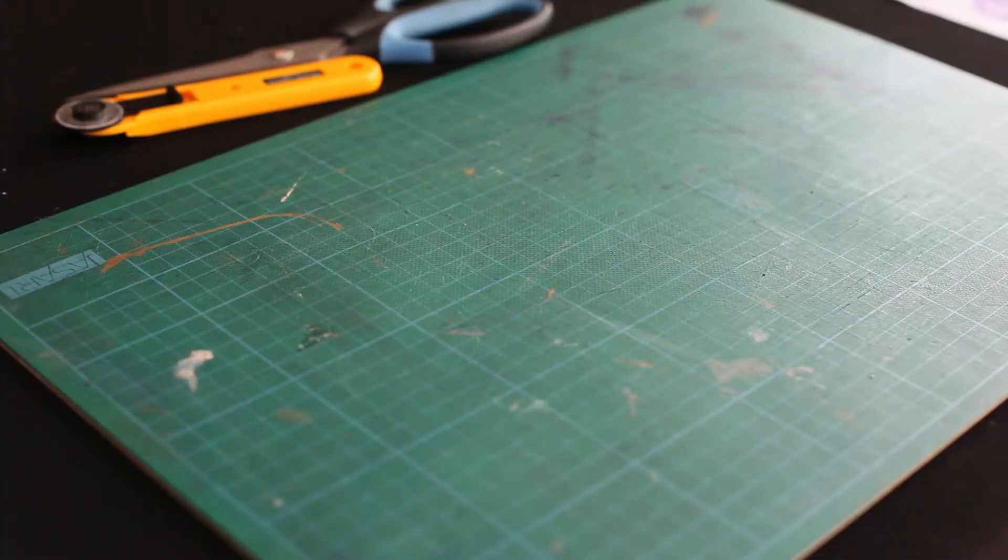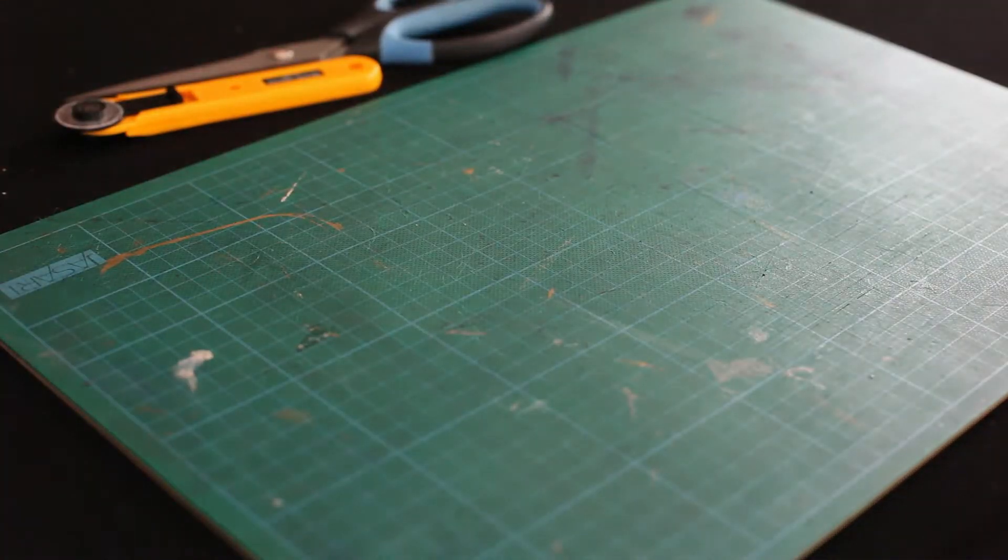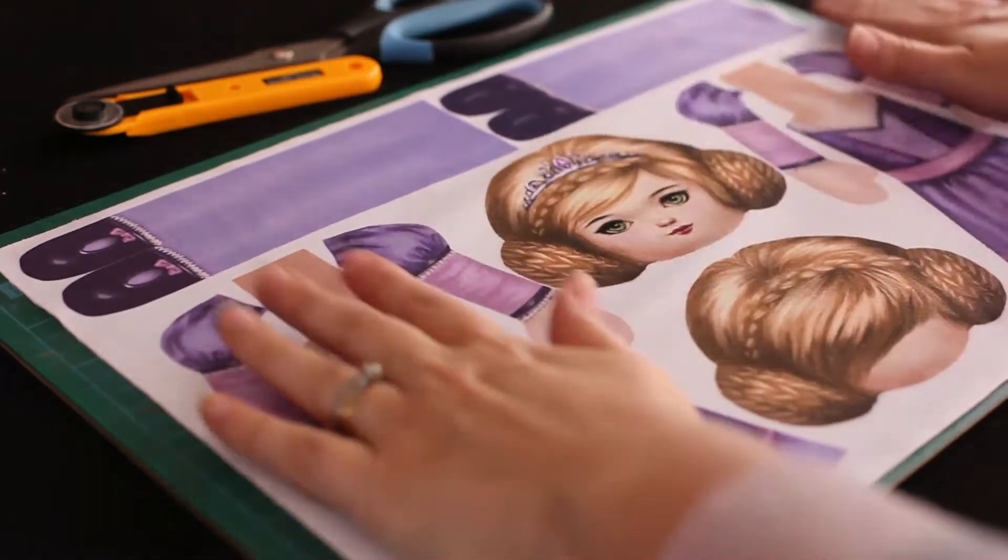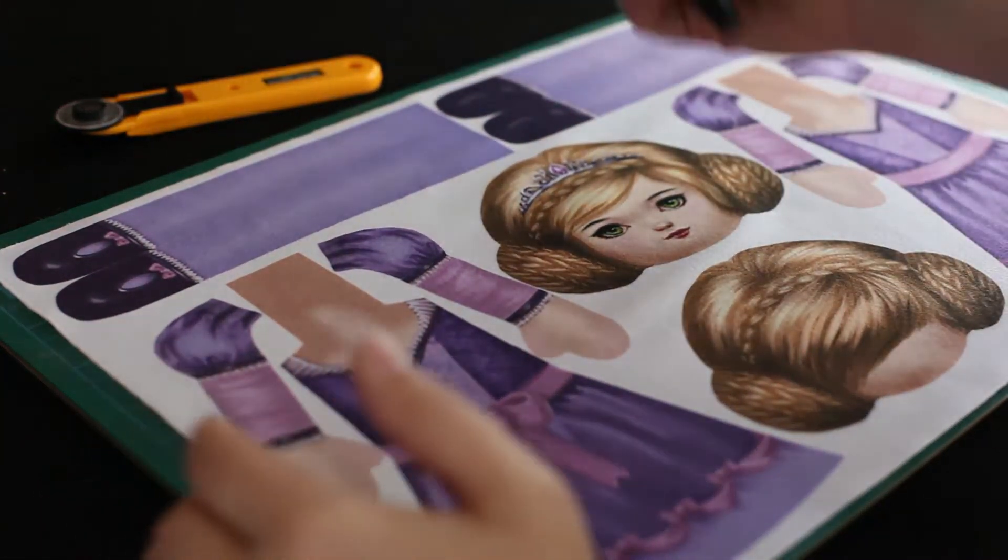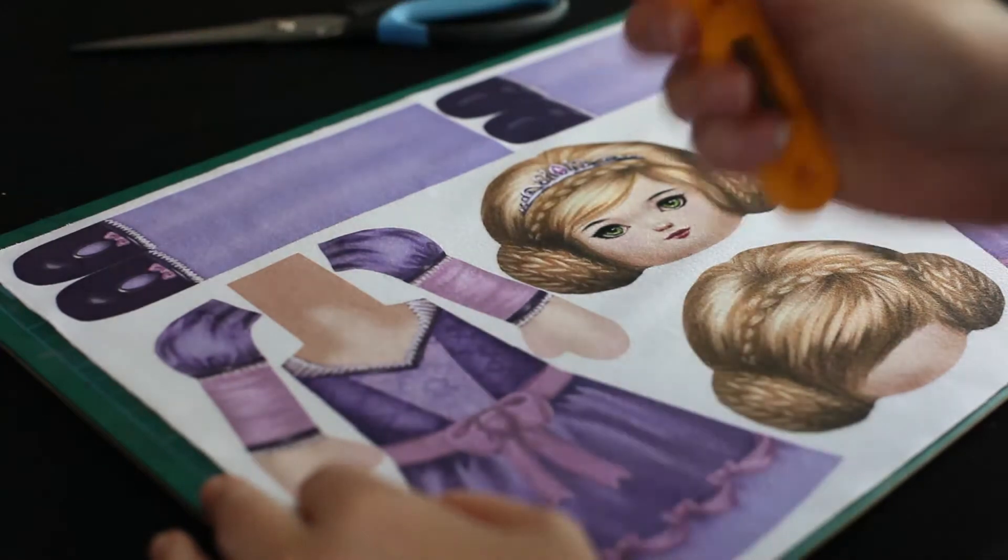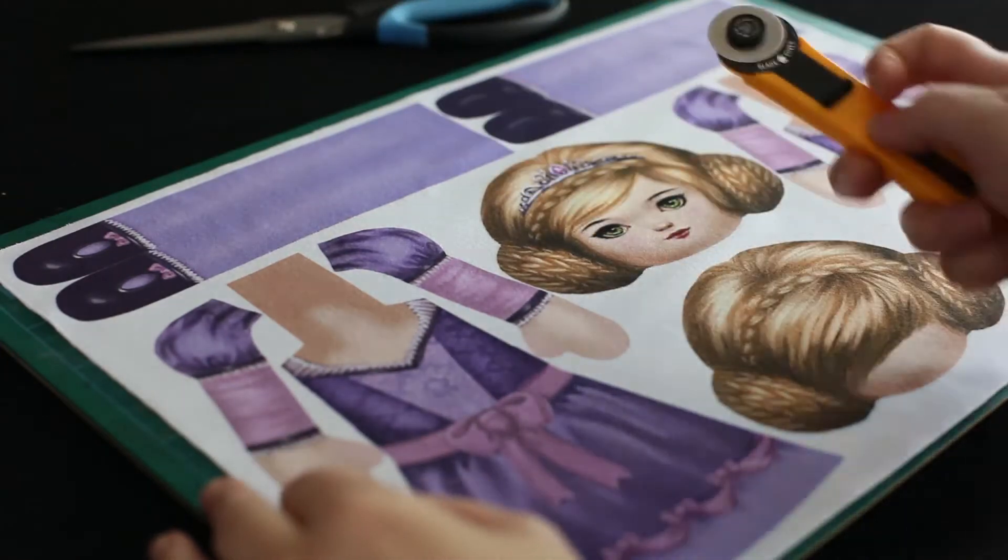The first step is to cut the pattern out of course. So here we have a cutting mat and the fabric sheet. Scissors are fine but I prefer to use a rotary cutter. I find it makes really quick work of cutting the pattern out.